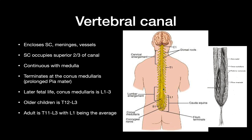In older children, about 1 to 7 years old, it's in T12 to L3. In adults, it's generally from T11 all the way down to L3, with L1 being the average. After the end of the conus medullaris is the cauda equina and then the filum terminale.